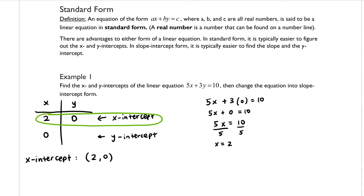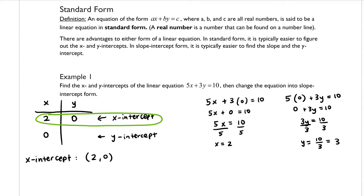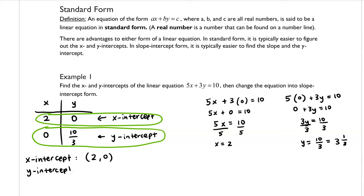Now let's find the y-intercept by plugging in 0 for x. We have 5 times 0 plus 3y equals 10, which gives us 3y equals 10. Dividing both sides by 3, we get y equals 10 thirds, which is the same as 3 and 1 third. So our y-intercept is the ordered pair 0, 10 thirds.